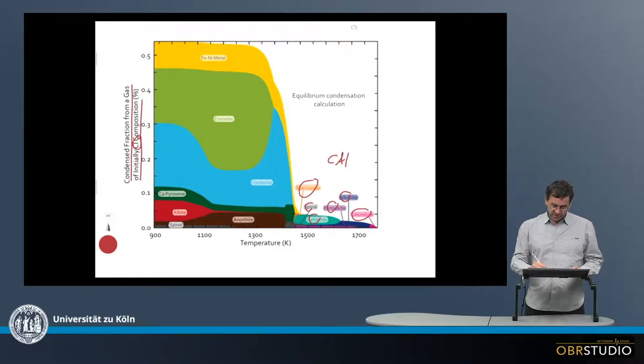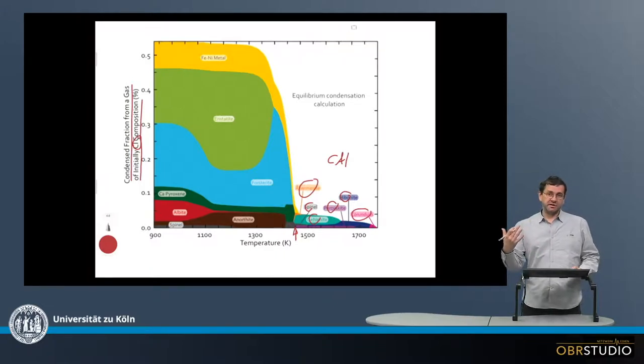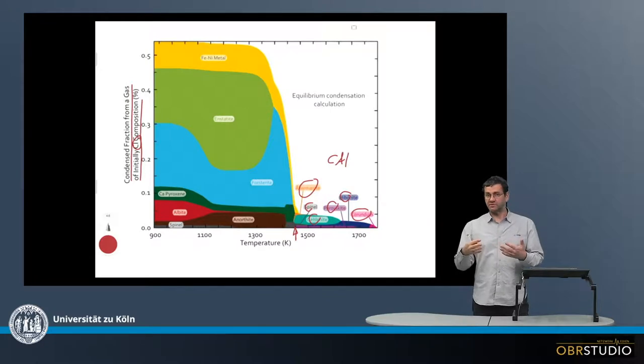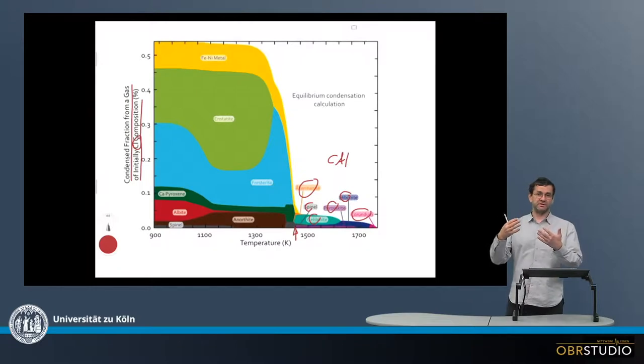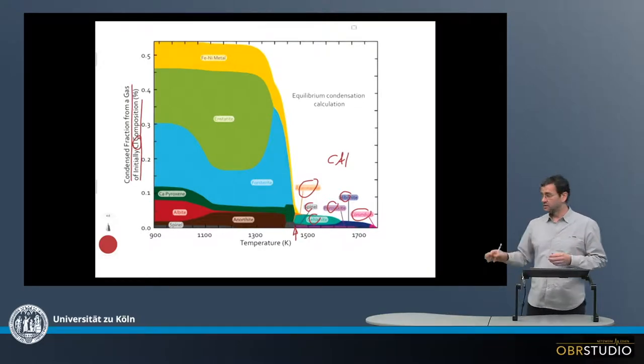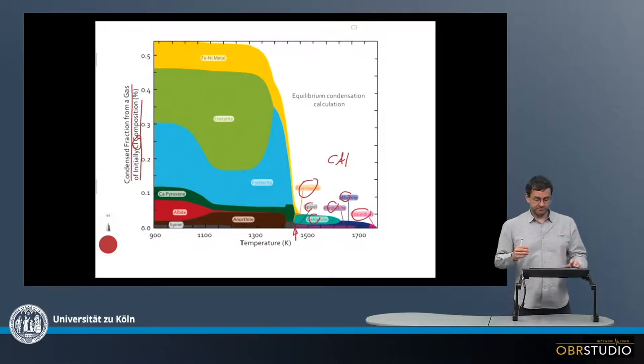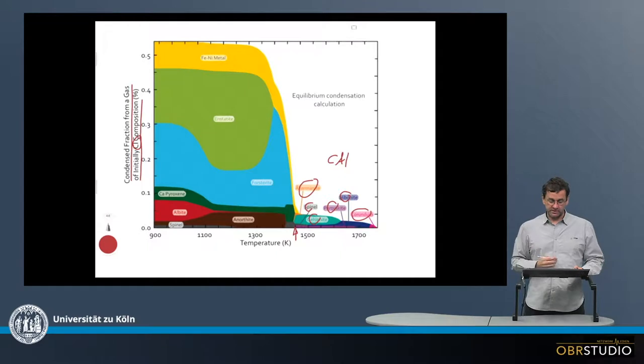So then at a certain point, which is something around maybe 1400 Kelvin or so, the main elements start to condense. And the main elements are magnesium, silicon and iron. Magnesium and silicon building the silicates, olivine, pyroxene primarily because magnesium silicon ratio is about one. So high temperature condensate is olivine, it forms first, but because of the magnesium silicon ratio of one, a lot of pyroxene forms later. And the iron mostly condenses as metal or sulphide. Because the oxygen fugacity is very low, it's highly reducing, and therefore most of the iron is in the metal phase.